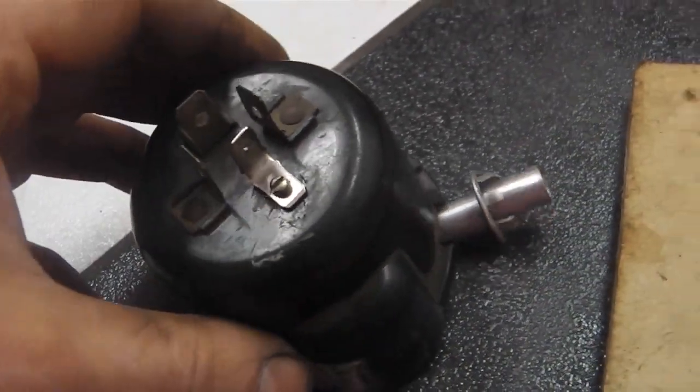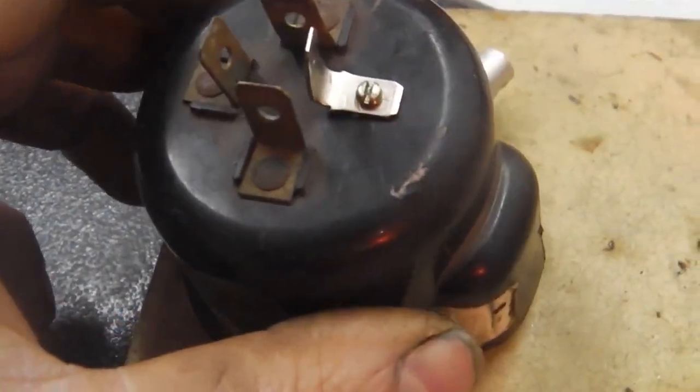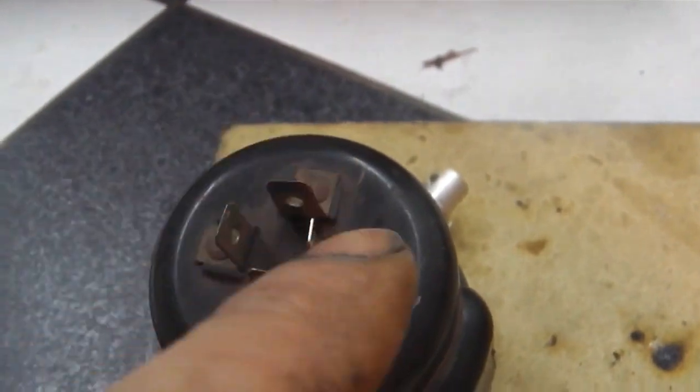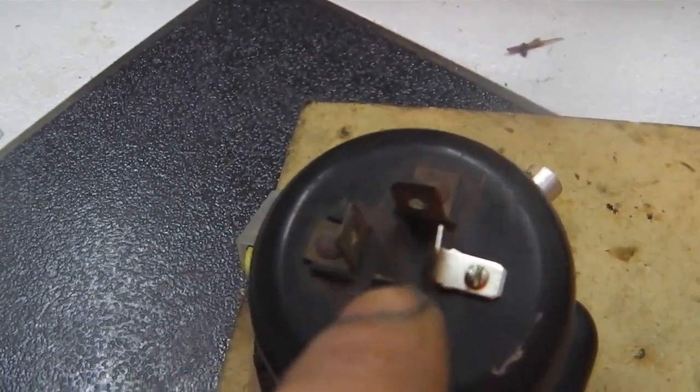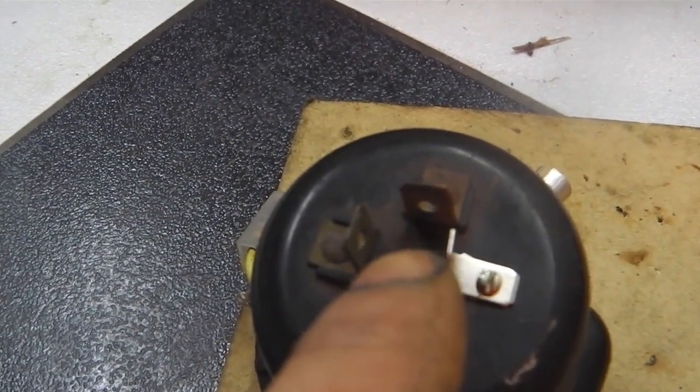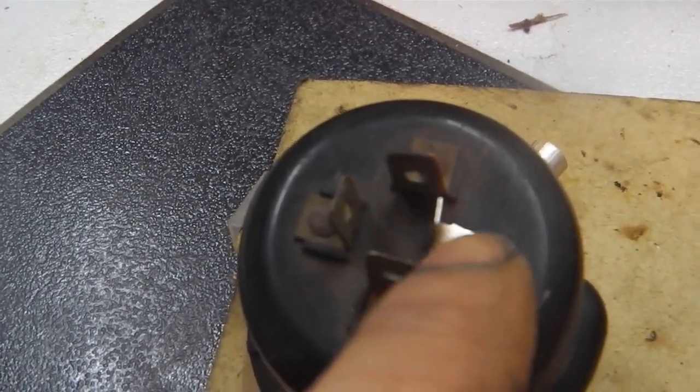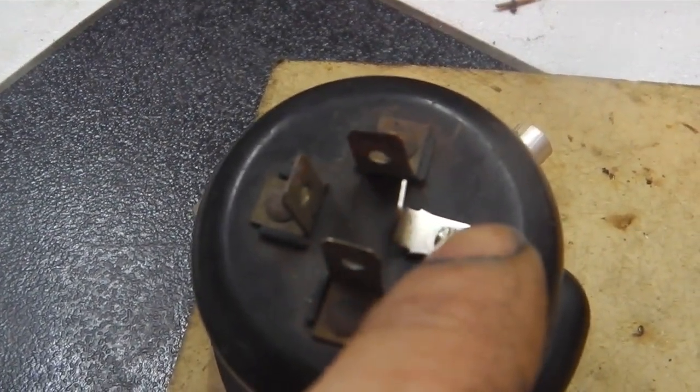Right, just making up the spade, the extra spade terminal for the side lights. Side lights are already on this, but the side light spades now getting used for the high beam bulb, which means we need an extra tag for the side light.